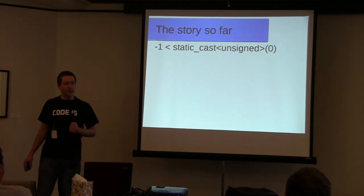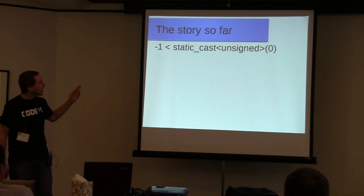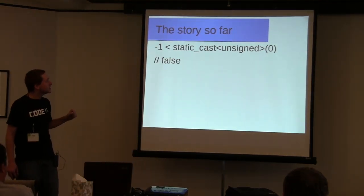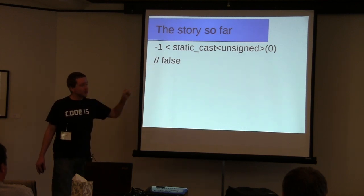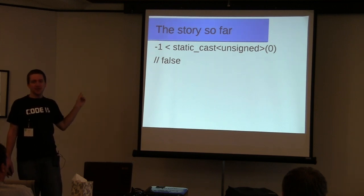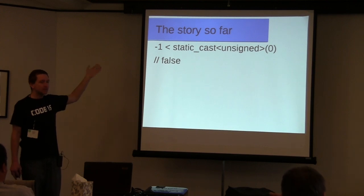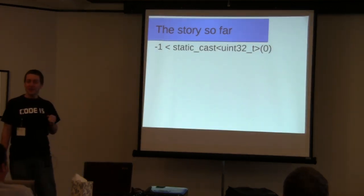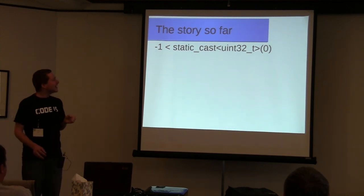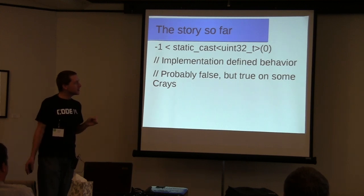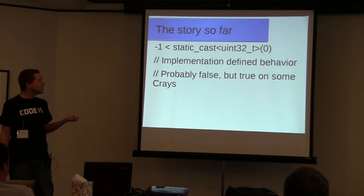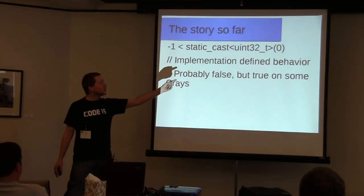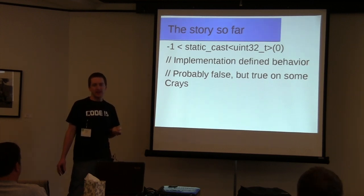For this next example, negative one is less than an unsigned zero. Nobody believes that's undefined behavior — correct. It is actually false, because when you have a negative one that's an int compared with an unsigned zero, that negative one is implicitly promoted to unsigned, which then becomes the largest possible unsigned value — wraps around — and on most systems, 4.2 billion is going to be greater than zero.